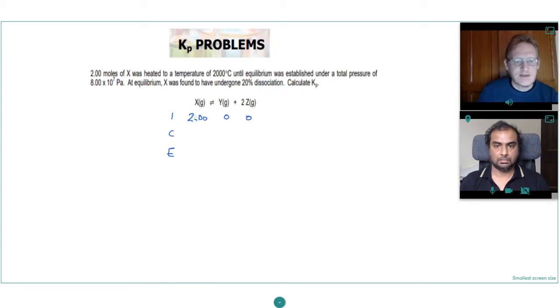And 10% of 2 would be 0.2, so 20% will be 0.4. So that's gone down by 0.4. And X to Y is a 1 to 1 ratio, so Y would have increased by 0.4. And Z is a 1 to 2 ratio X to Z, so Z would have increased by 0.8.